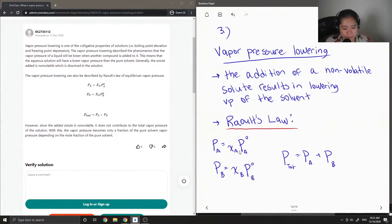The pressure of the pure solvent is denoted with the zero at the top like that. And generally, the solute added is non-volatile, which is dissolved in the solution. So the vapor pressure lowering can also be described by Raoult's Law of Equilibrium Vapor Pressure, where Pa is equal to the mole fraction of A times the pure solvent vapor pressure of A, and the pressure of B is equal to the mole fraction of B times the pure solvent vapor pressure of B.